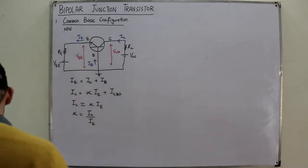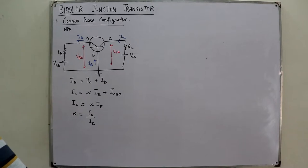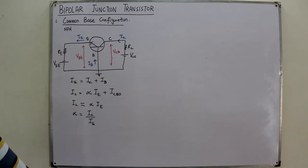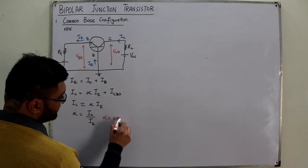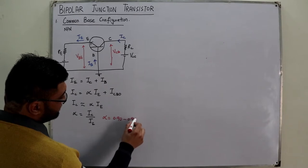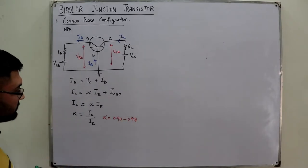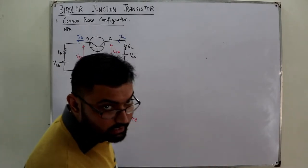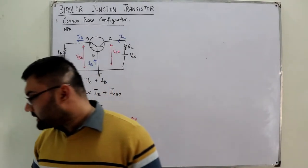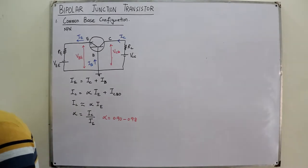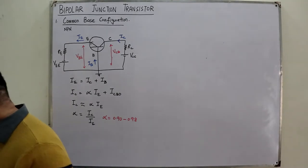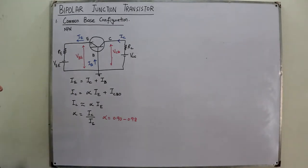The common base current amplification factor (output by input) has a value ranging from about 0.90 to 0.98 or 0.99. Alpha is less than 1. And IB = (1 − α) × IE.